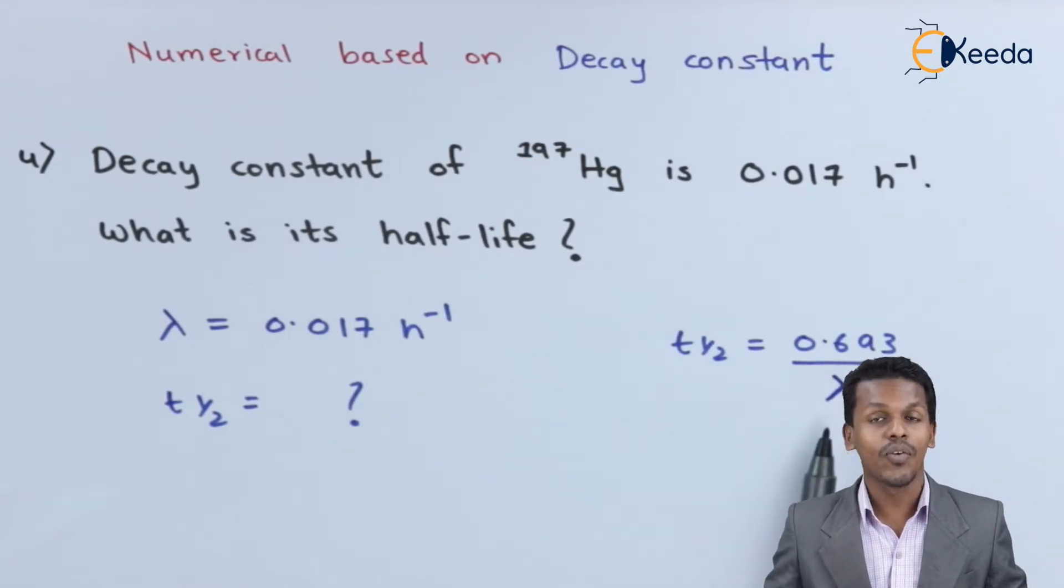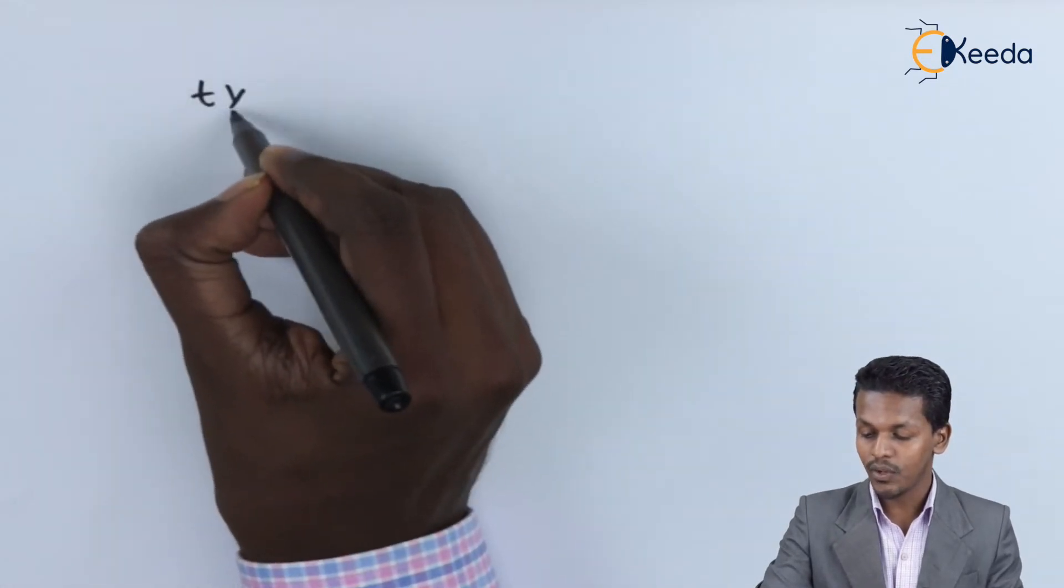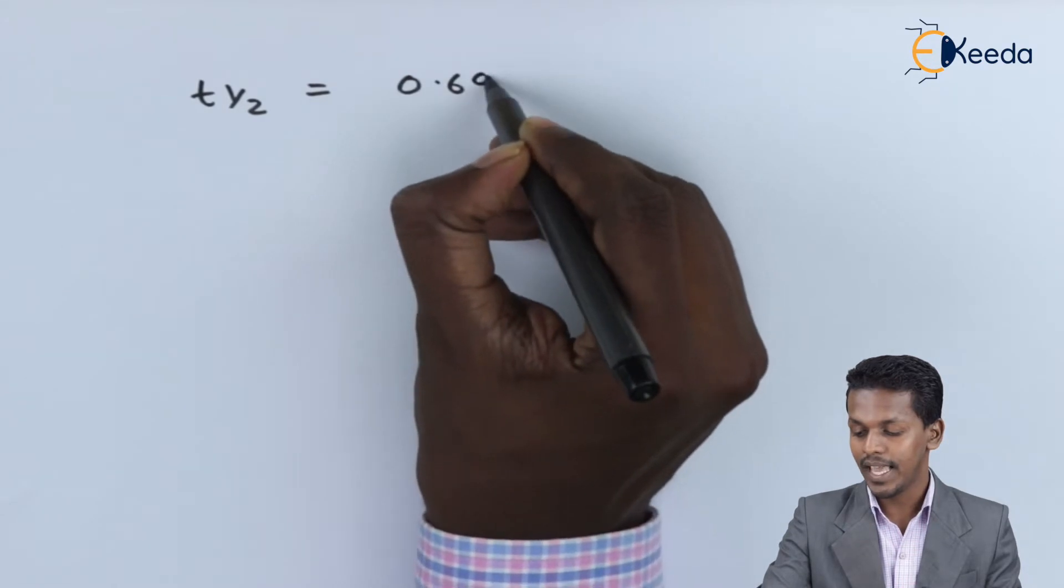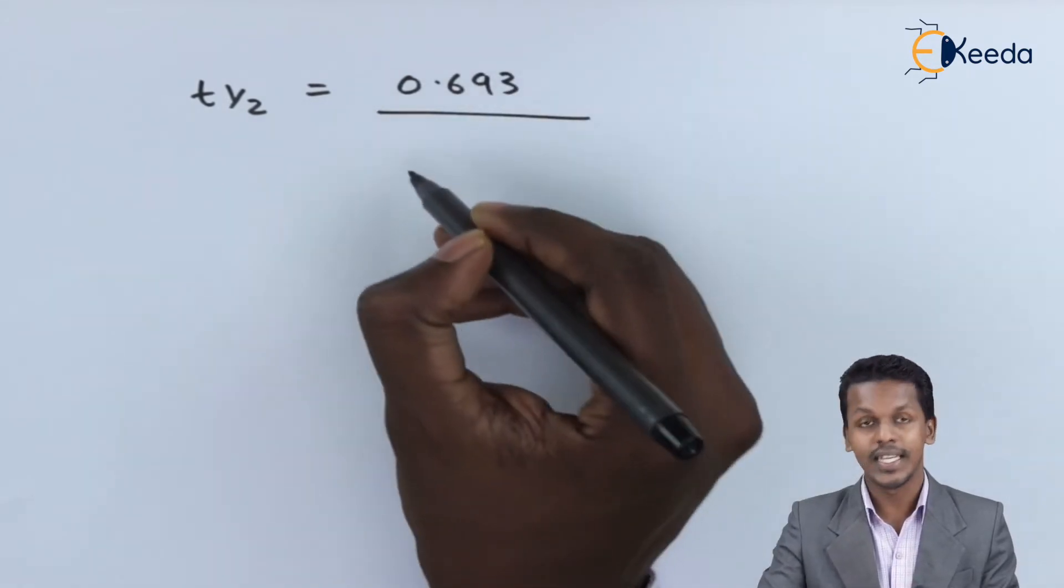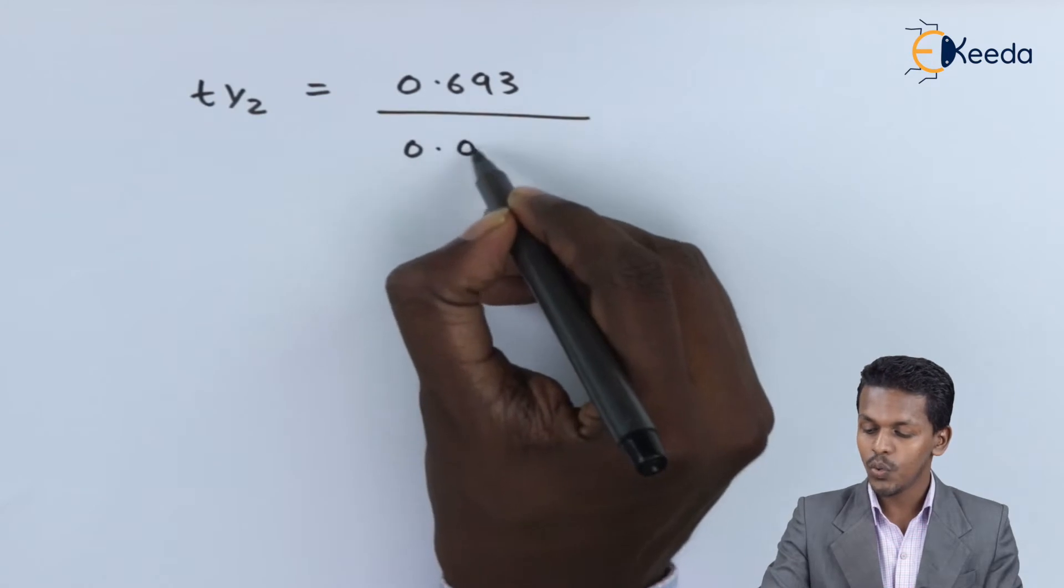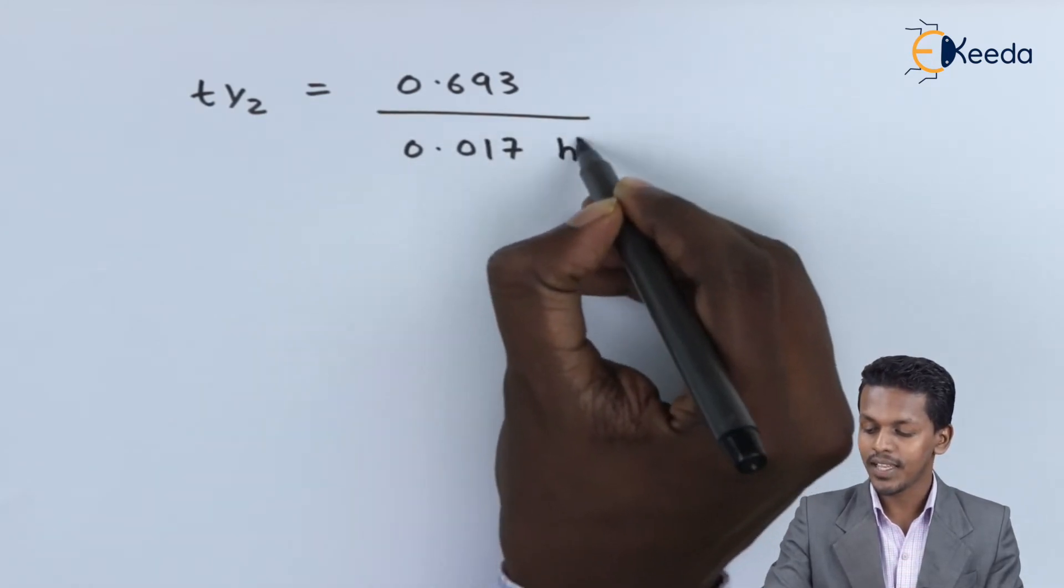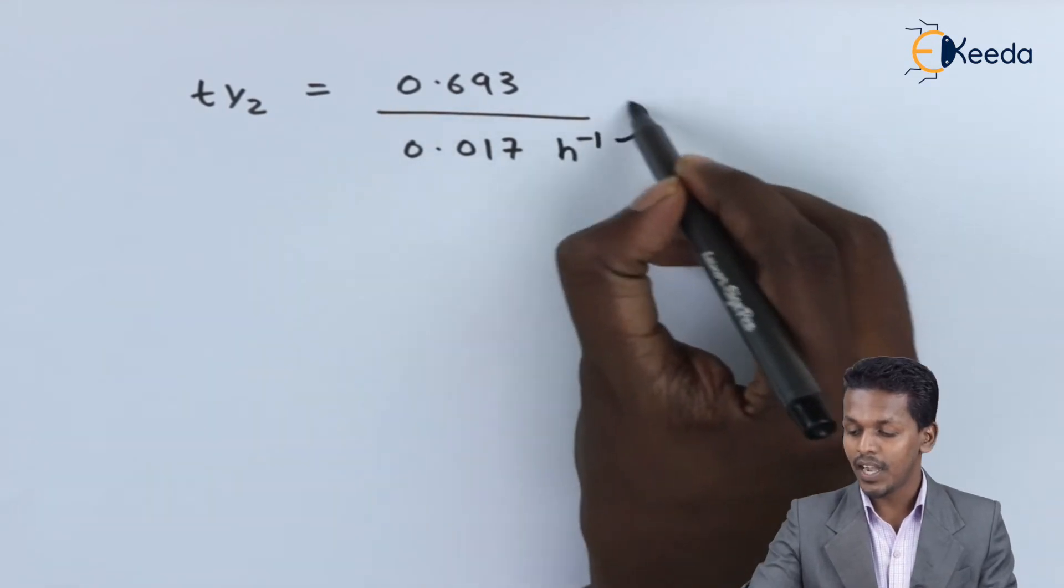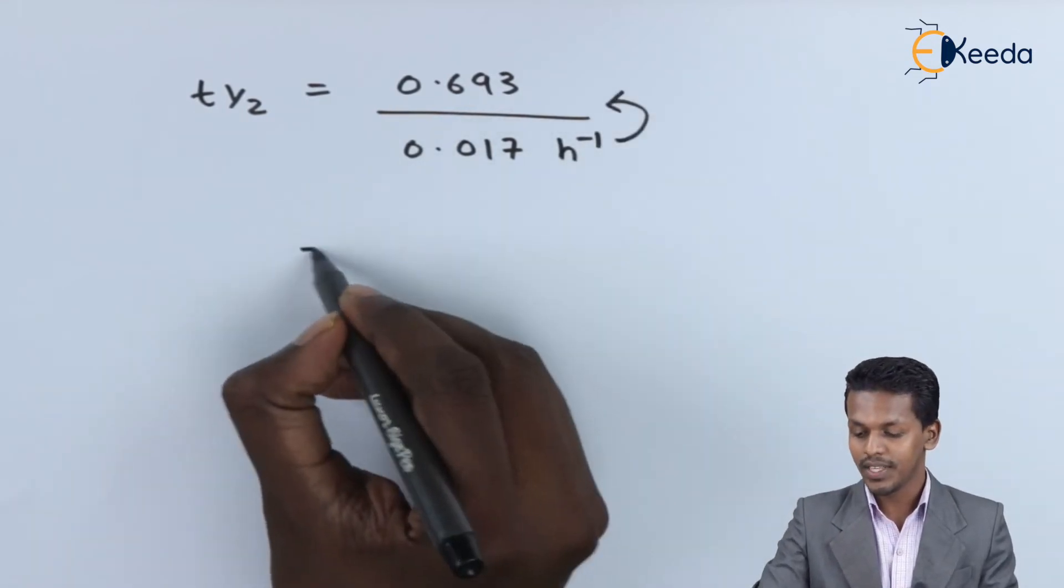Since we have to find the value of half-life, and here we have the value of the decay constant which is 0.017 h^-1, in that case the half-life will have a value with a unit of hours.